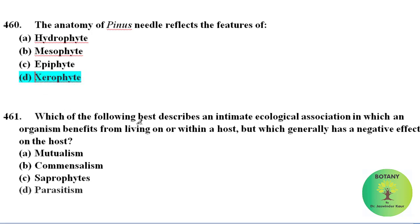Which of the following best describes an intimate ecological association in which an organism benefits from living on or within a host, but which generally has a negative effect on the host? This type of association is called parasitism. An example of parasitism is Cuscuta, which benefits from the host plant and has a negative effect on it.